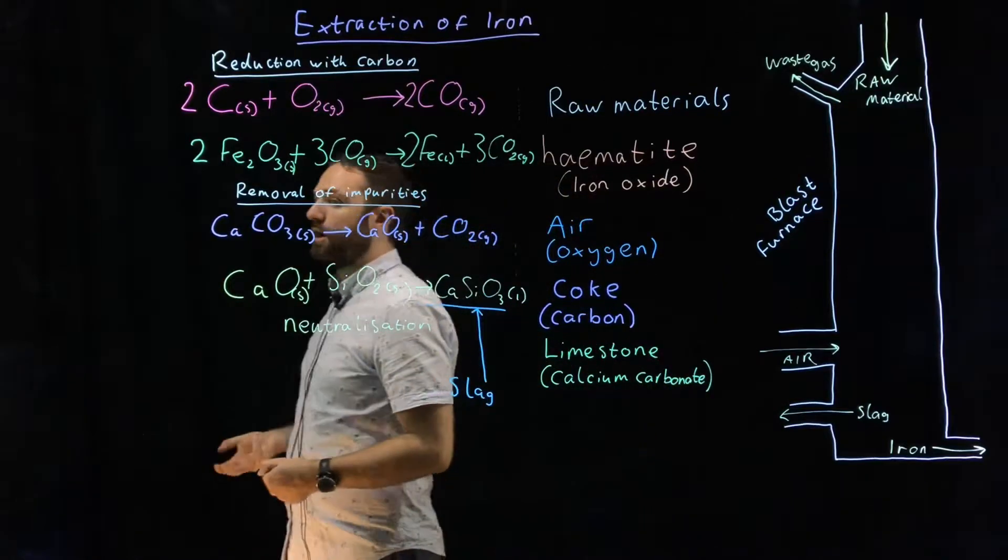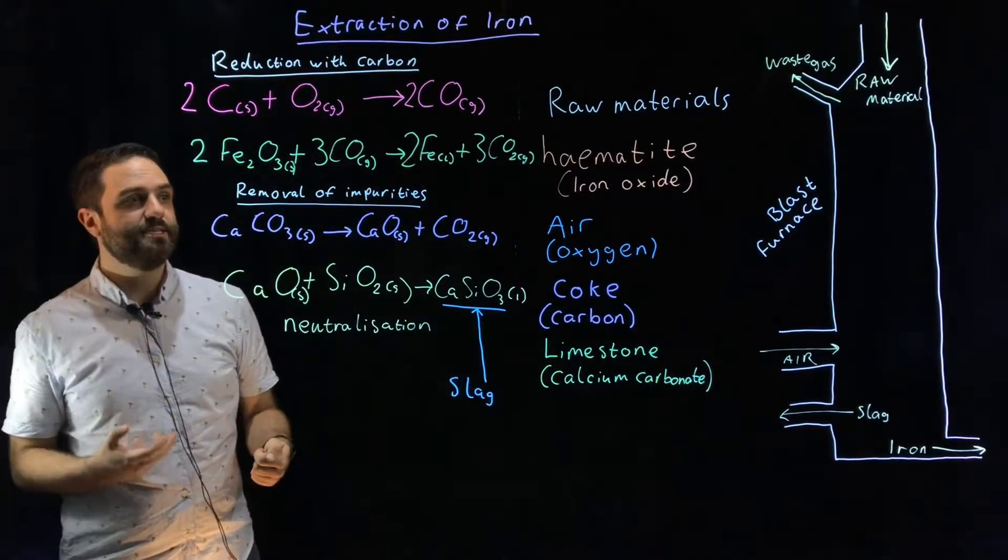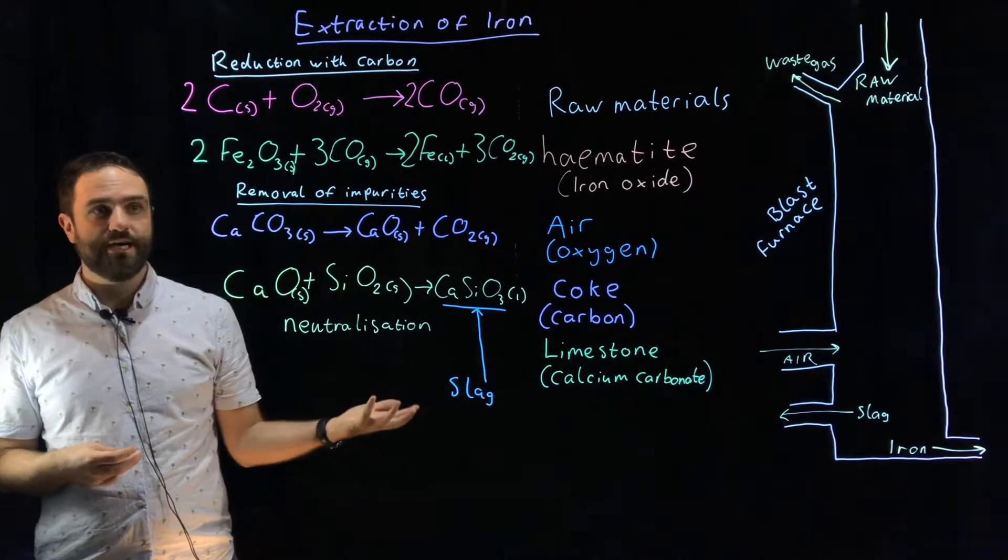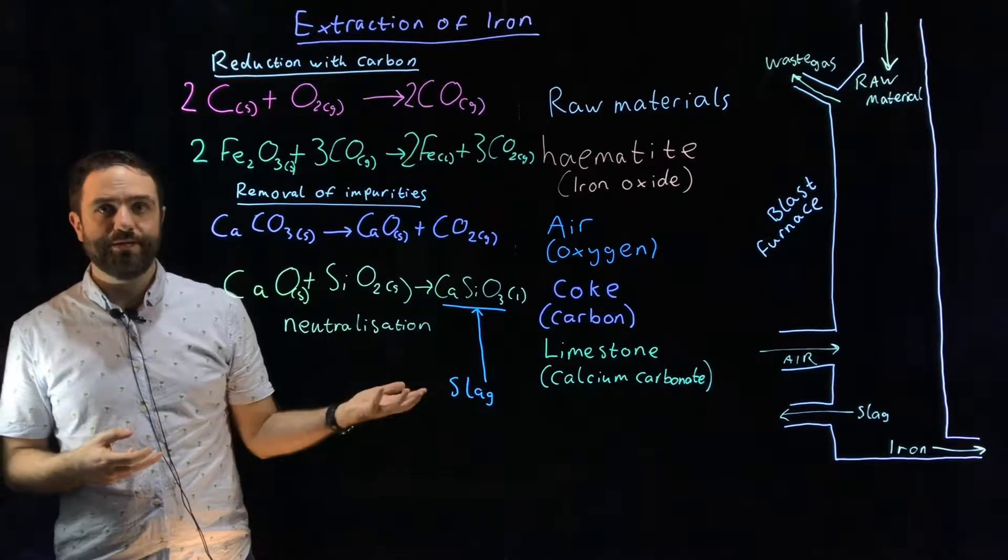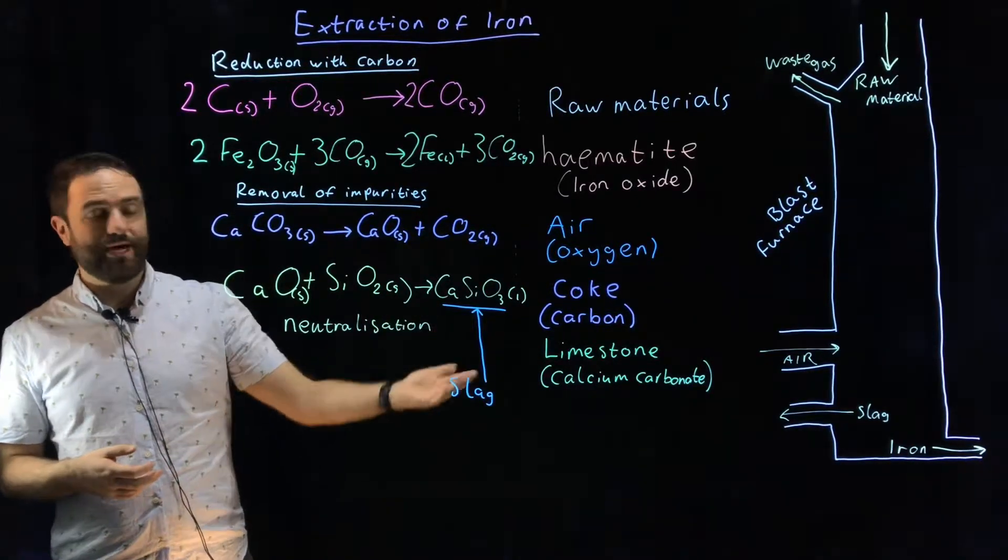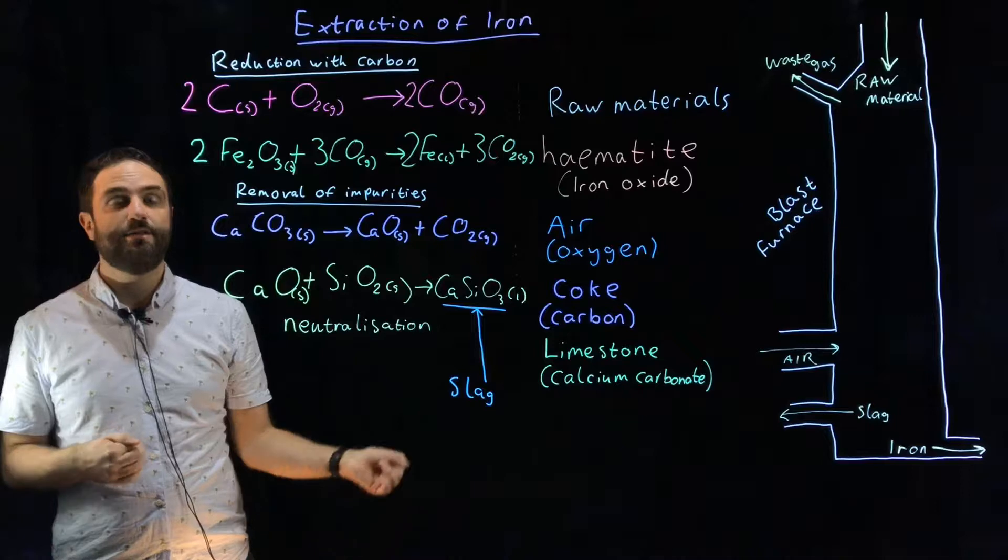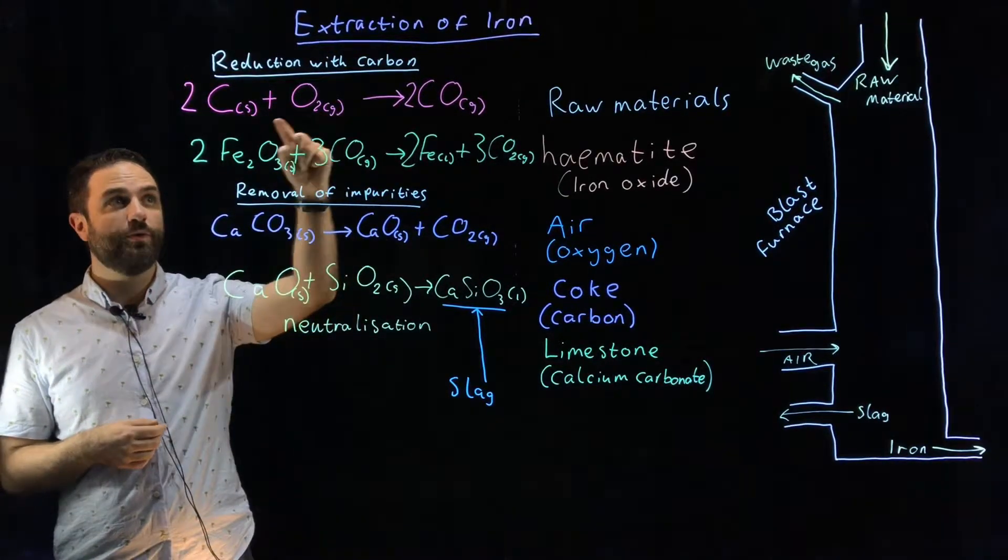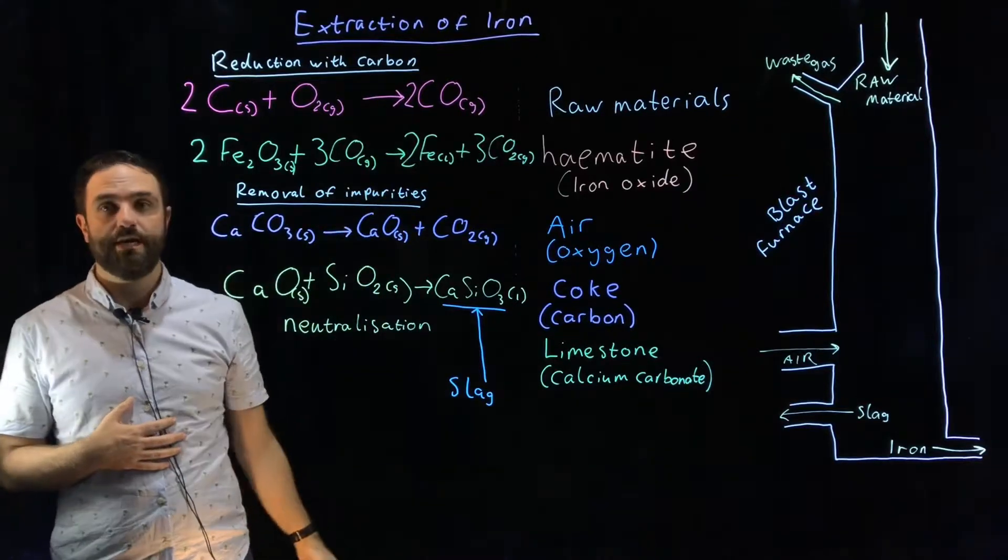So what are the chemical reactions that need to take place? Well firstly we need to reduce the iron oxide to iron. How do we do that? Well we need carbon monoxide. We don't add carbon monoxide, we get that through the incomplete combustion of carbon with oxygen shown here. We end up with carbon monoxide.